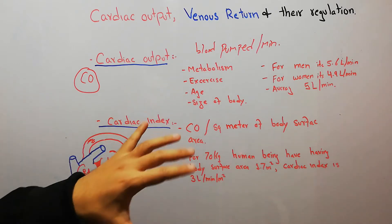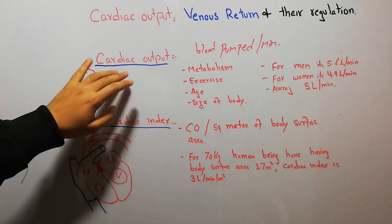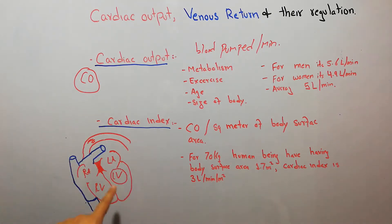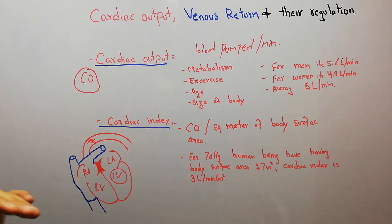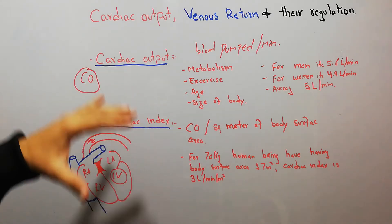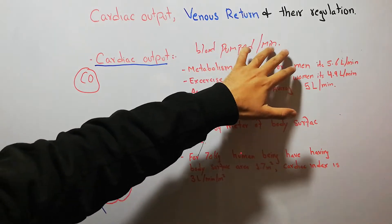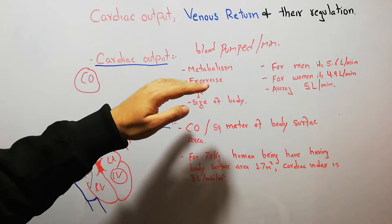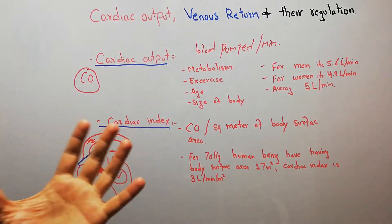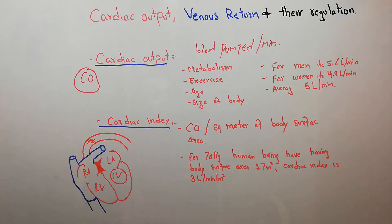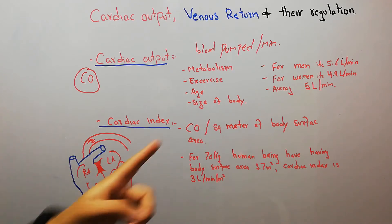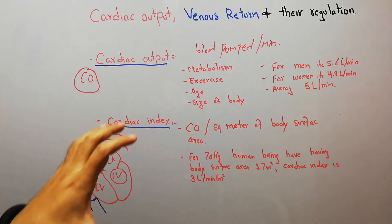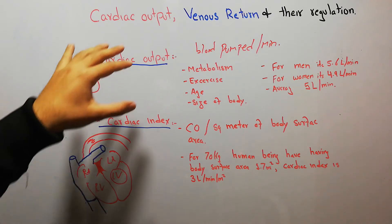There are different parameters which change the amount of blood pumped by the left ventricle. These parameters include metabolism. If the metabolism of the human body increases, then the amount of blood pumped by the left ventricle into the aorta every minute increases. If metabolism decreases, then cardiac output also decreases.